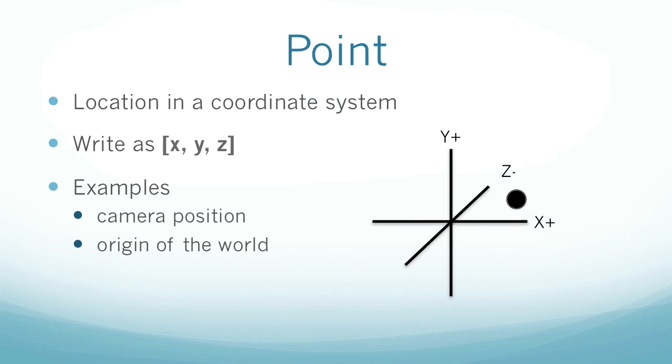Now a point is a location in a coordinate system. Fairly straightforward, it's just a point. You write a point as x, y, z, so the x value and then the y value and then the z value. Using a point, you can describe any location in any coordinate system. Examples of points are camera positions and the origin of the world, that's always a point.